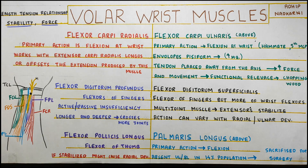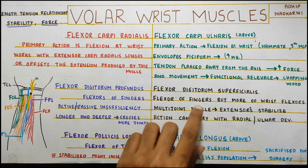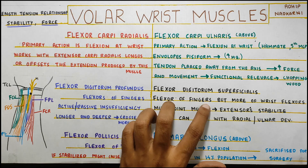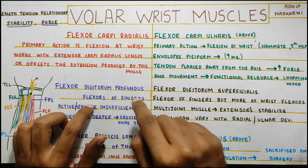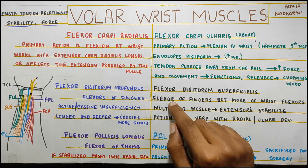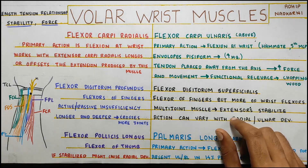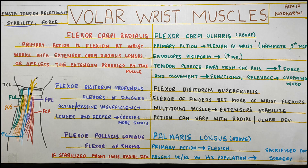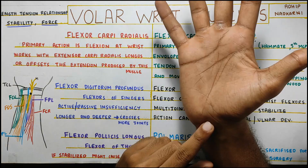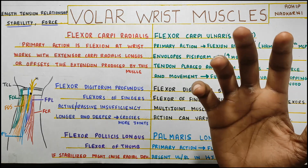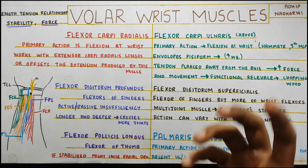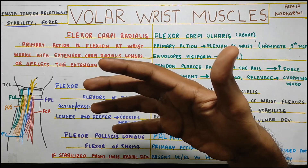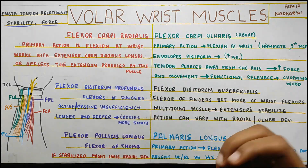Moving to flexor digitorum superficialis — it also causes flexion at the fingers and the wrist, but it is more of a wrist flexor compared to the profundus, which is more of a finger flexor. It is again a multi-joint muscle, crosses a lot of joints in your hand, and along with the help of your extensors, it stabilizes your wrist joint. The action can vary with radial and ulnar deviation — if it's in more of ulnar deviation, it will assist flexion in that position.